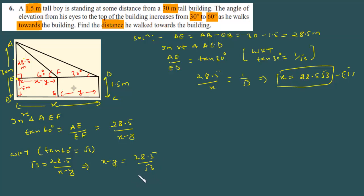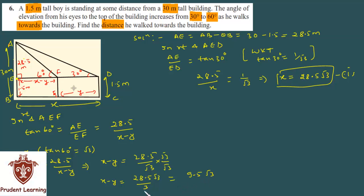Now the denominator has root 3, so let's rationalize it. Multiply by root 3 on both numerator and denominator. So finally, x minus y will be 28.5 root 3 upon 3. When you cancel by 3, you will get 9.5 root 3. So you have x minus y as 9.5 root 3.